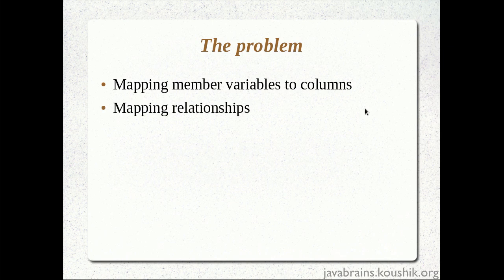The second pain point is mapping relationships. Say a user object has a reference to an address object. We would probably have an address table, and I would have to map the user object to the user table, the address object to the address table, and if there's a dependency between these two objects, I would have to create a foreign key and map it to a primary key. So the address table's primary key would be mapped as a foreign key of the user table — this relationship also has to be taken care of.